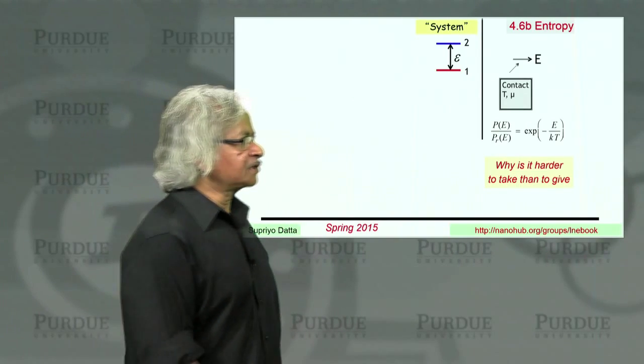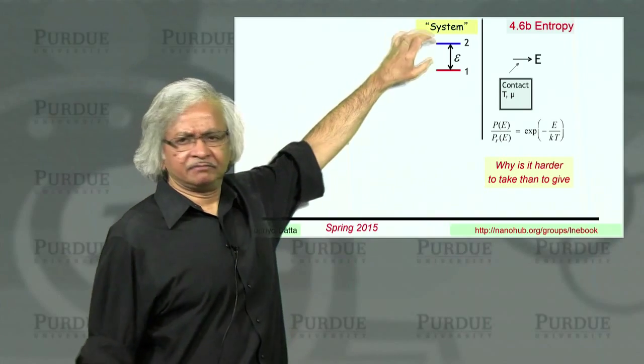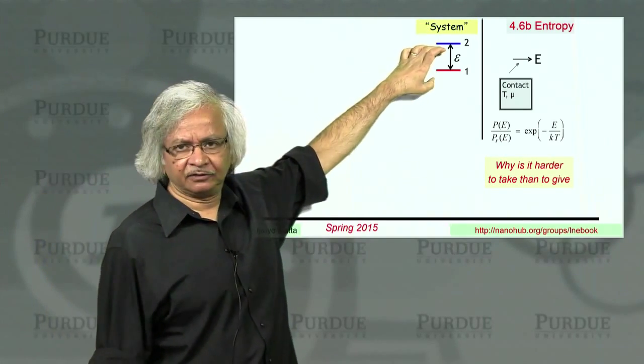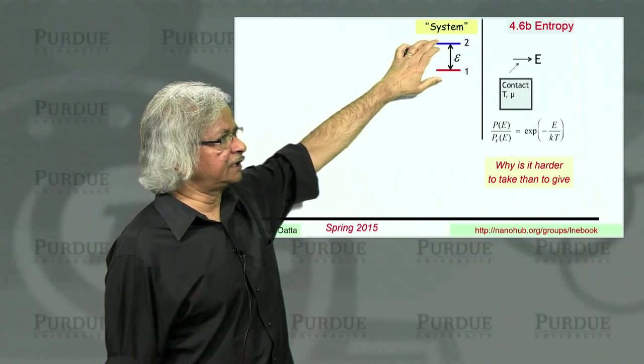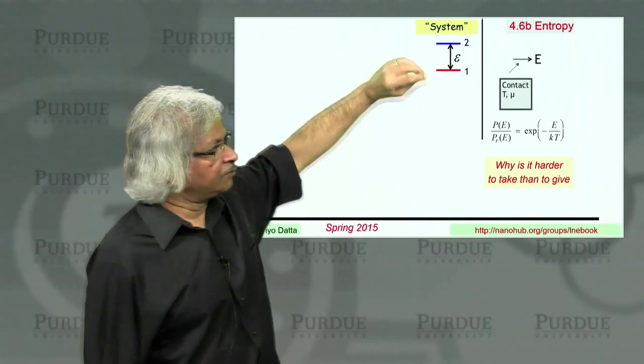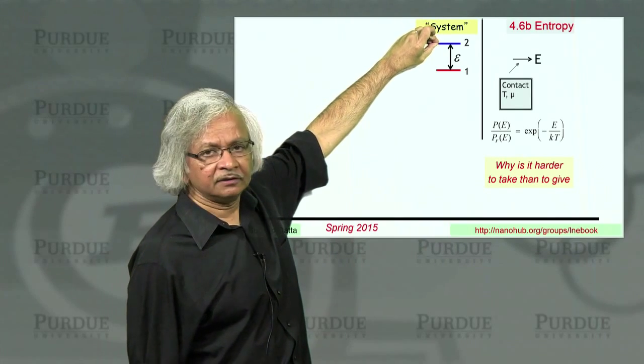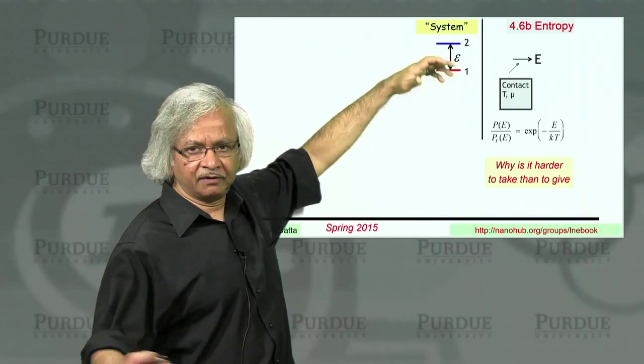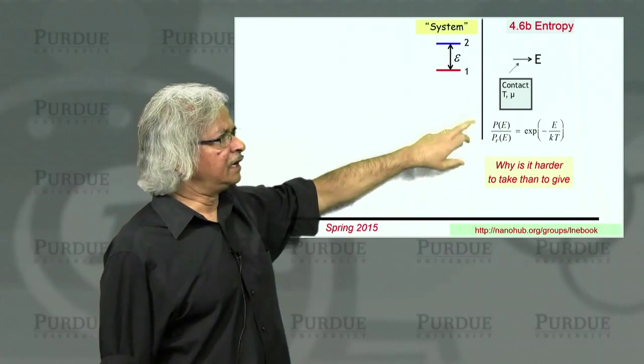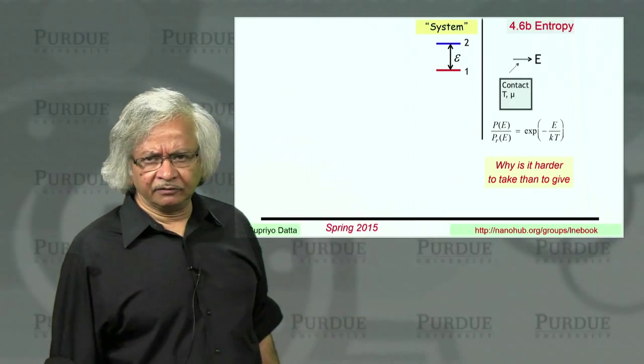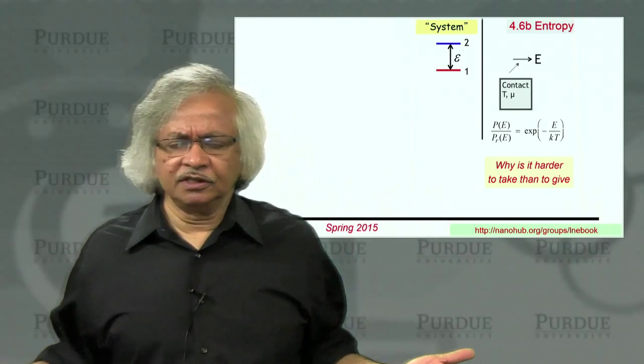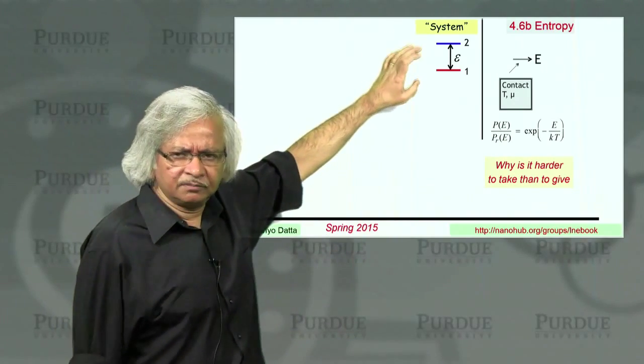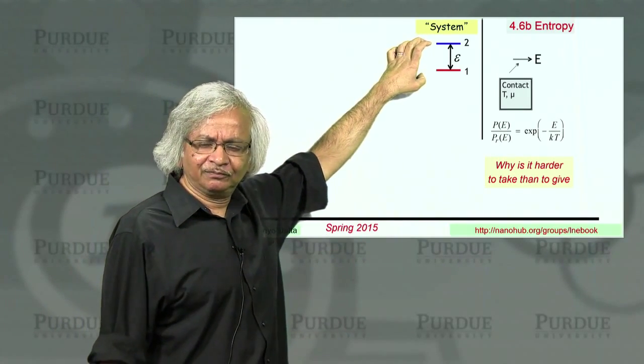So for this purpose, what we think about is a small system, something with say two energy levels. So it could be a hydrogen atom, for example. You have a lower level and an upper level. And what we know is that if you put an electron in the upper level, it will immediately radiate light or give up energy and come down to the lower level. On the other hand, if you put it in the lower level, it will just stay there.